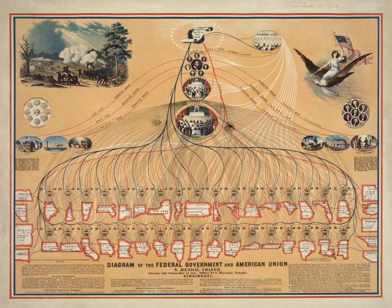In contrast, the Senate is made up of two senators from each state, regardless of population. There are currently 100 senators — two from each of the 50 states — who each serve six-year terms. Approximately one-third of the Senate stands for election every two years.